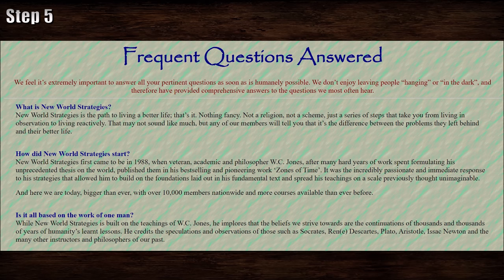The manipulation continues on the "frequent questions answered" page — kind of weird that it's not "frequently asked questions," right? New World Strategies describes itself as a path to living a better life. It came about in 1988 when veteran, academic, and philosopher W.C. Jones published his best-selling and pioneering work, Zones of Time. This inspired a greatly impassioned response, followed by the spreading of his teachings, and now over 10,000 members nationwide and courses available. Not immediately threatening — we've seen people make great breakthroughs before. But I do see a string connected to the carrot regarding membership. So now, where's the stick?